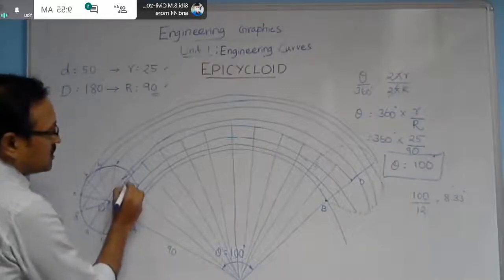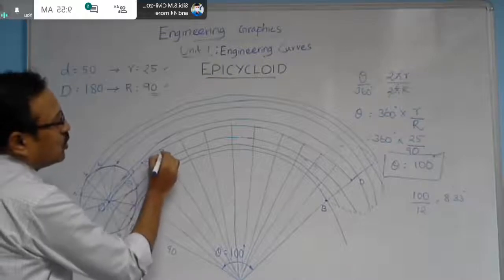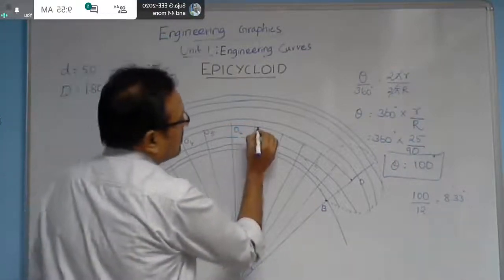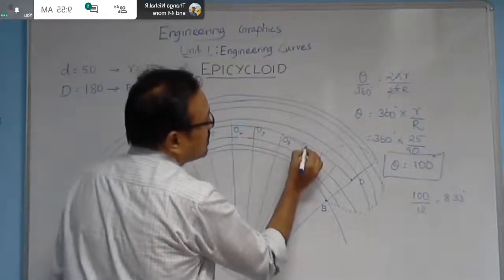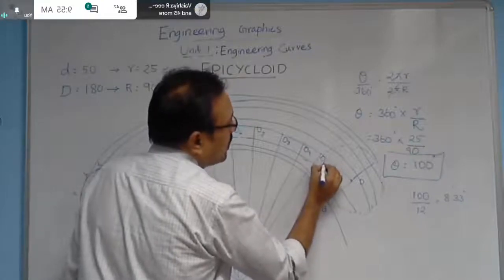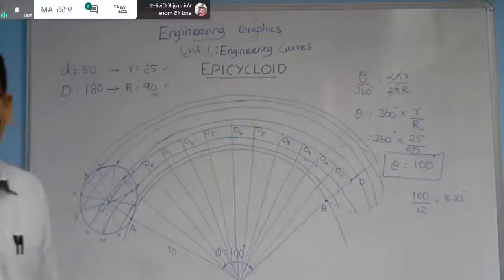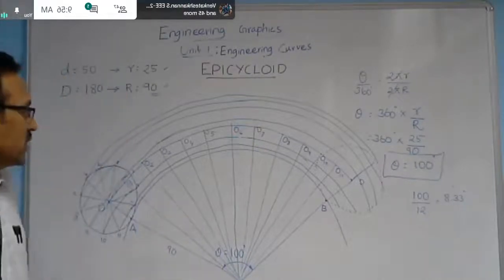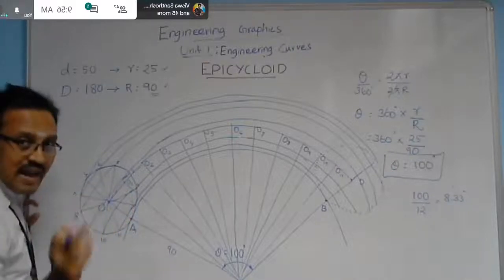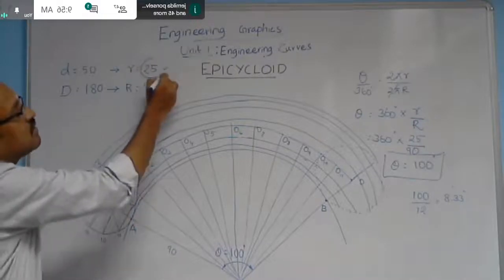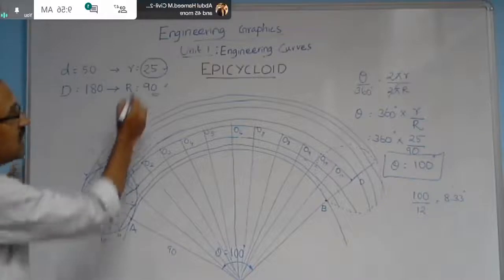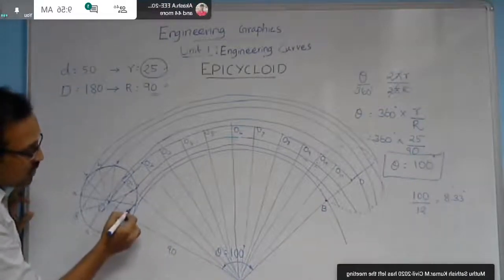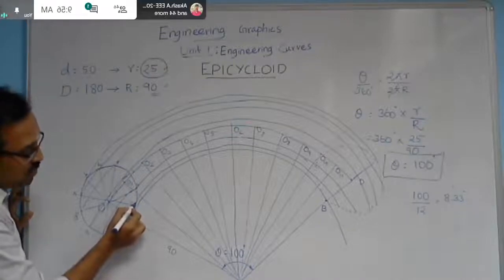Name these 12 center positions O1 through O11 along the arc. With O1 as center and 25 mm radius (same as the generating circle radius OA), cut an arc passing through point 1 on the arc — label this point 1''. With O2 as center and same radius, cut an arc through point 2, labeled 2''. With O3 as center, cut an arc through point 3, labeled 3''.